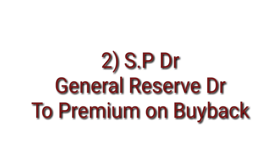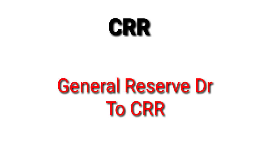Entry 2 is the premium adjustment entry: Securities Premium Account debit, General Reserve Account debit, to Premium on Buyback of Equity Shares. You can use General Reserve or Profit and Loss or any free reserve. Entry 3 is the CRR entry: General Reserve Account debit, to Capital Redemption Reserve Account. If General Reserve is not sufficient, you can use any other free reserve available.